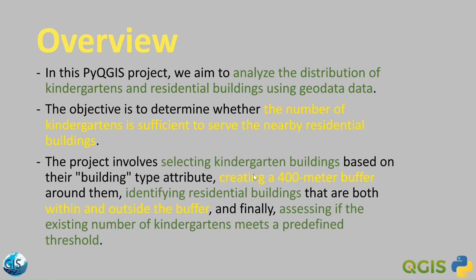The project involves selecting kindergarten buildings based on the building type attribute. I have a building layer and I want to find the kindergartens inside the building column. Then, creating a 400-meter buffer around them. After selecting the kindergartens, I will make a 400-meter buffer around them. Then, I will identify residential buildings that are both within and outside the buffer — we need to know which buildings are inside and which are outside. Finally, assessing if the existing number of kindergartens meets the predefined threshold.